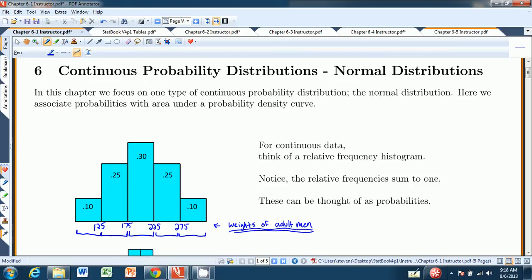The one thing to notice is that we can think of these as probabilities. For example, the probability of randomly selecting a man with a weight between 175 and 225 is 0.30.